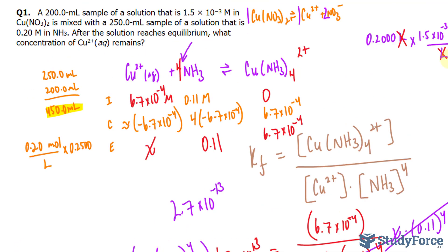That is the amount of copper left after reacting with NH3. And as predicted, this is much, much smaller than 6.7 times 10 to the power of negative 4. So almost nothing of Cu2+ remains.